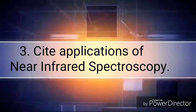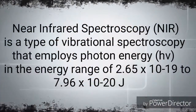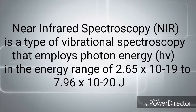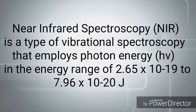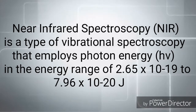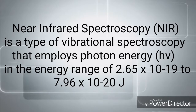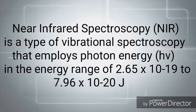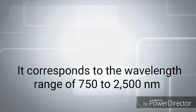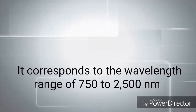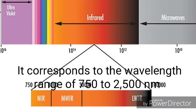Cite applications of Near-Infrared Spectroscopy. Near-Infrared Spectroscopy, or NIR, is a type of vibrational spectroscopy that employs photon energy in the energy range of 2.65 x 10⁻¹⁹ to 7.96 x 10⁻²⁰ joules. It corresponds to the wavelength range of 750 to 2,500 nm.